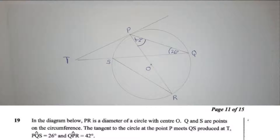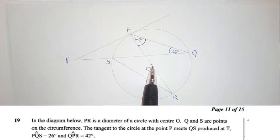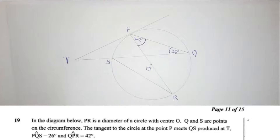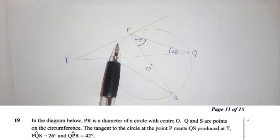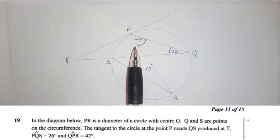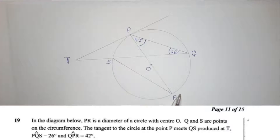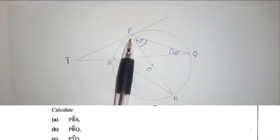The question reads: in the diagram below, PR is a diameter — PR is here, passing through the center O. Q and S are points on the circumference, touching the circle. The tangent of the circle at point P meets QS produced at T. They have given angle PQS is 26 degrees and angle QPR is 42 degrees, and they say calculate angle PRS.